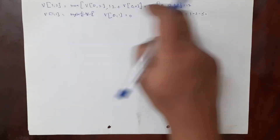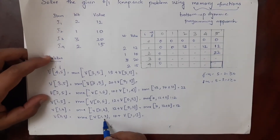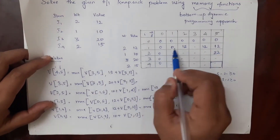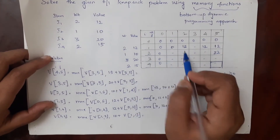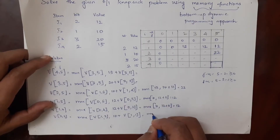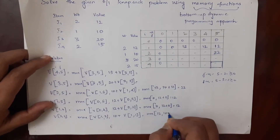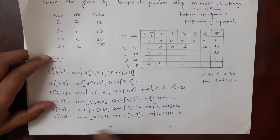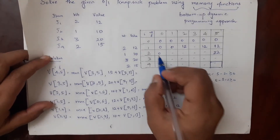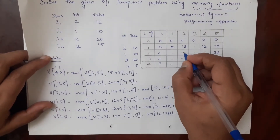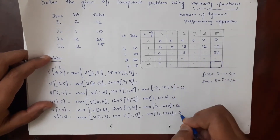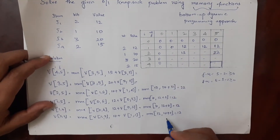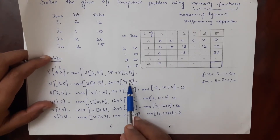Now substituting into v(2,2): maximum of v(1,2) = 12, or 10 plus v(1,1) = 0, giving maximum of 12 or 10. So v(2,2) = 12. We fill the entry 2 comma 2 with 12.